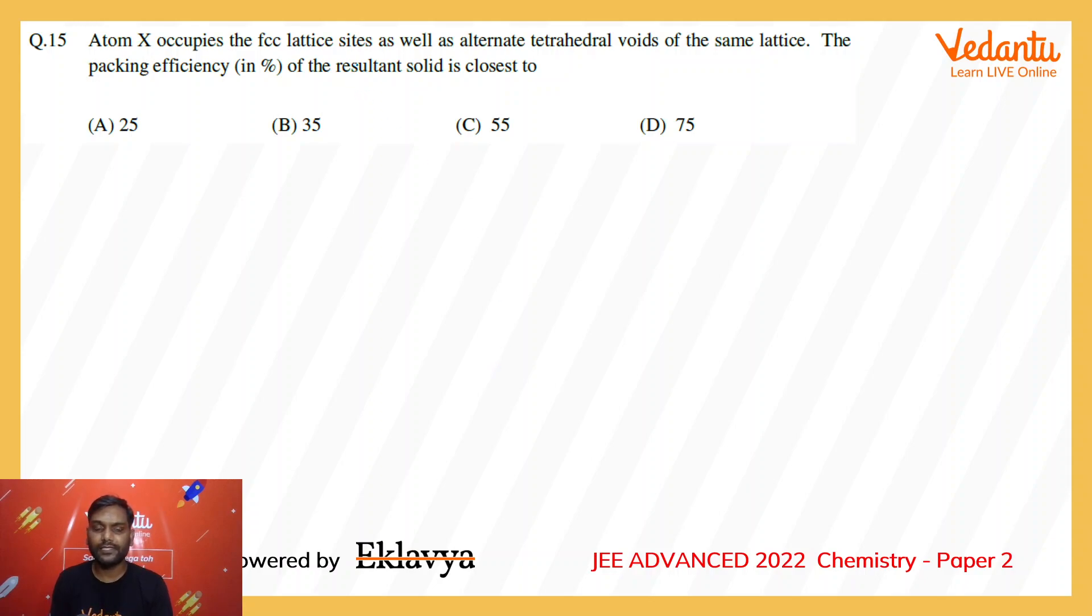This is basically describing diamond type structure. In diamond, carbon makes FCC lattice and carbon is present only in the alternate tetravoids. In an FCC lattice, the distance of tetravoid from the corner is root...